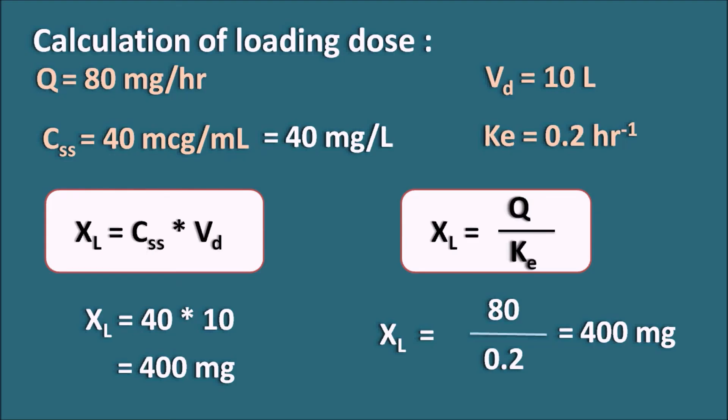In case of IV infusion, we can achieve the steady state concentration at 95% after 4.32 half-lives. To achieve an immediate steady state concentration, the IV infusion can be given along with a loading dose, which immediately produces the steady state concentration. The steady state concentration is calculated as the ratio of the rate of infusion to the clearance, and the loading dose is the rate of infusion divided by the elimination rate constant.